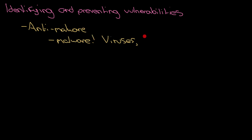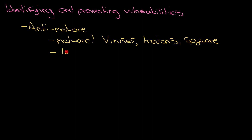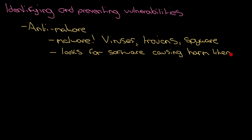First off, the very easy one to remember is anti-malware. You've got things like viruses, trojans, and spyware. What anti-malware will do is look on the computer to see if anything is acting like a virus, trojan, or spyware — causing some sort of harm — and stop it in its tracks. It will isolate it and delete it from your system. That's anti-malware.